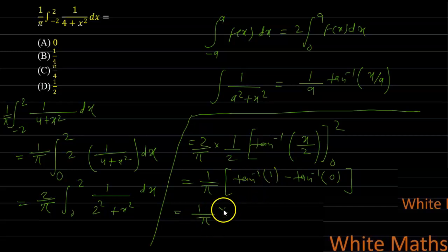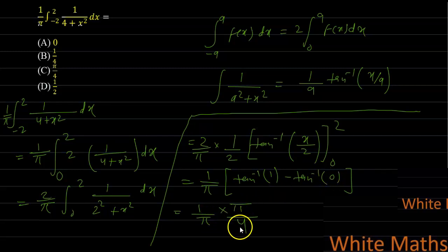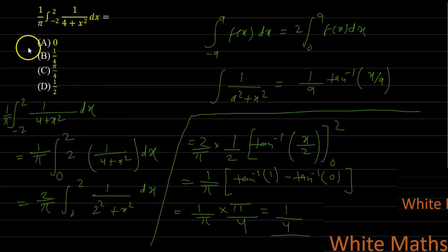The value of tan⁻¹(1) is π/4, and the value of tan⁻¹(0) is 0. So the expression becomes (1/π) × (π/4). The π cancels, giving 1/4. Therefore 1/4 is the required answer and option B is correct. Thank you.